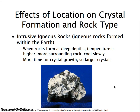Intrusive igneous rocks are formed inside the Earth. The rocks form at deep depths where the temperature is higher. There is more surrounding rock, and therefore it cools very slowly. Since it's cooling so slowly, there is more time for crystal growth, so you have larger crystals, or mineral grains.